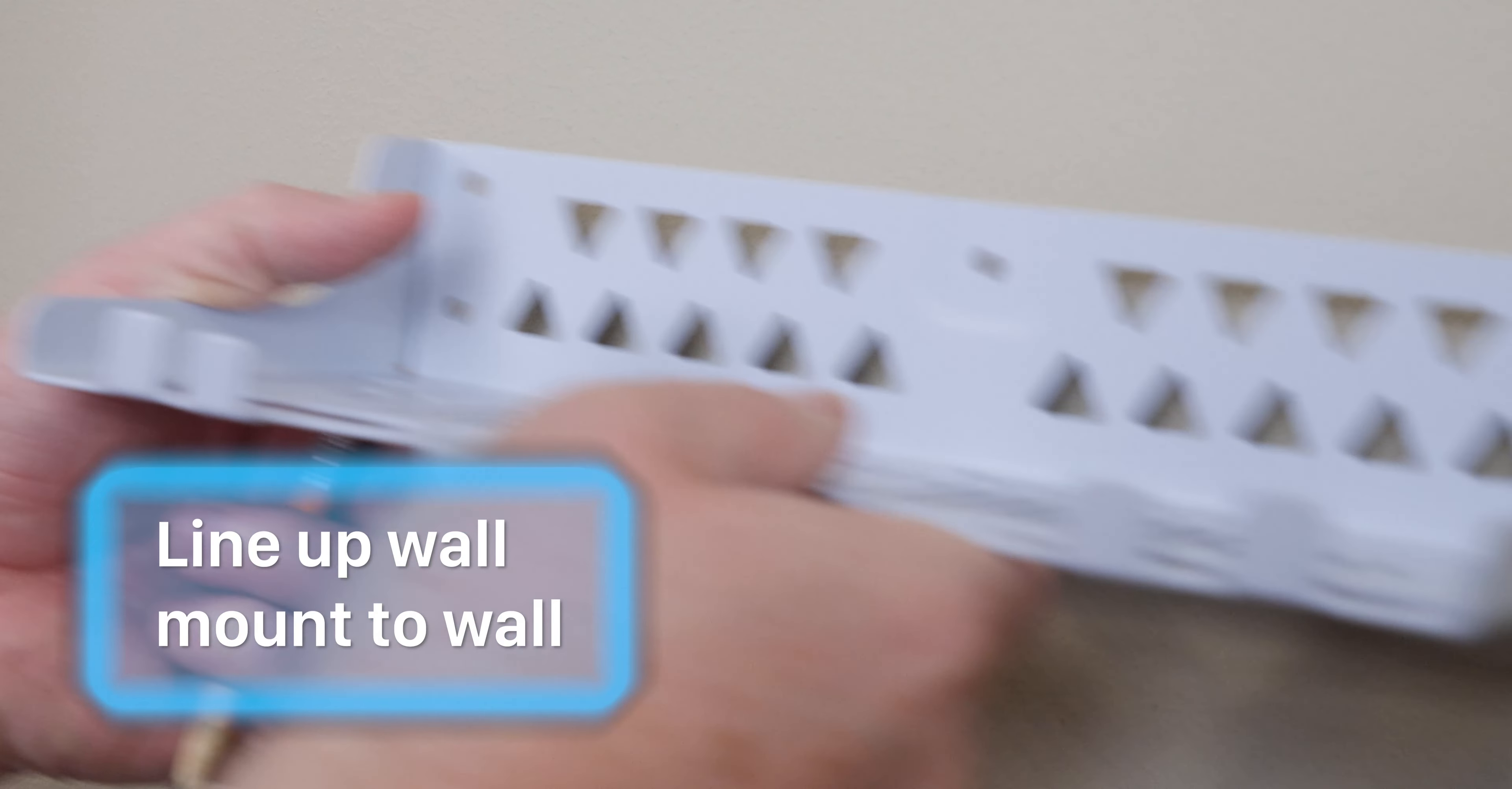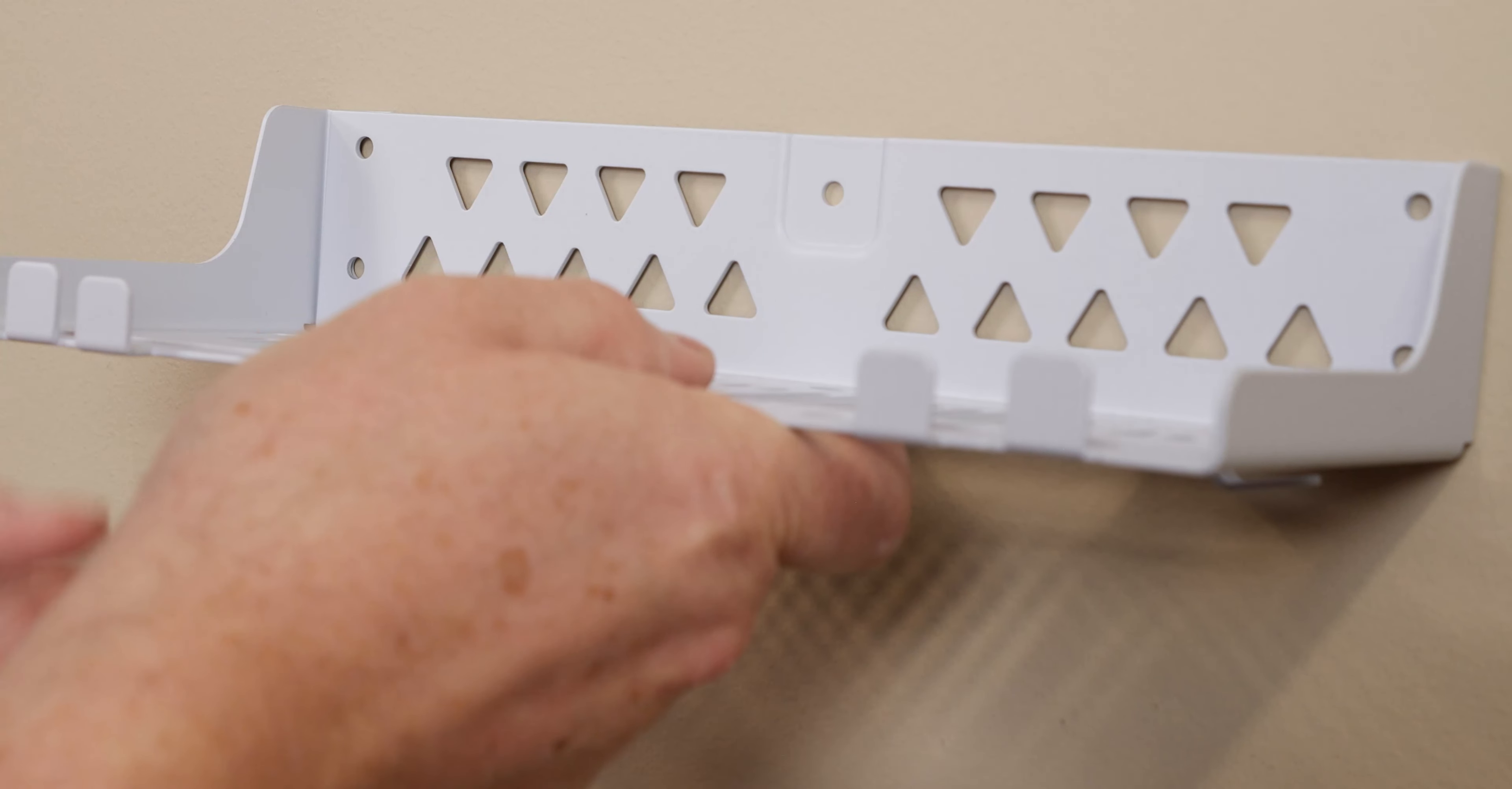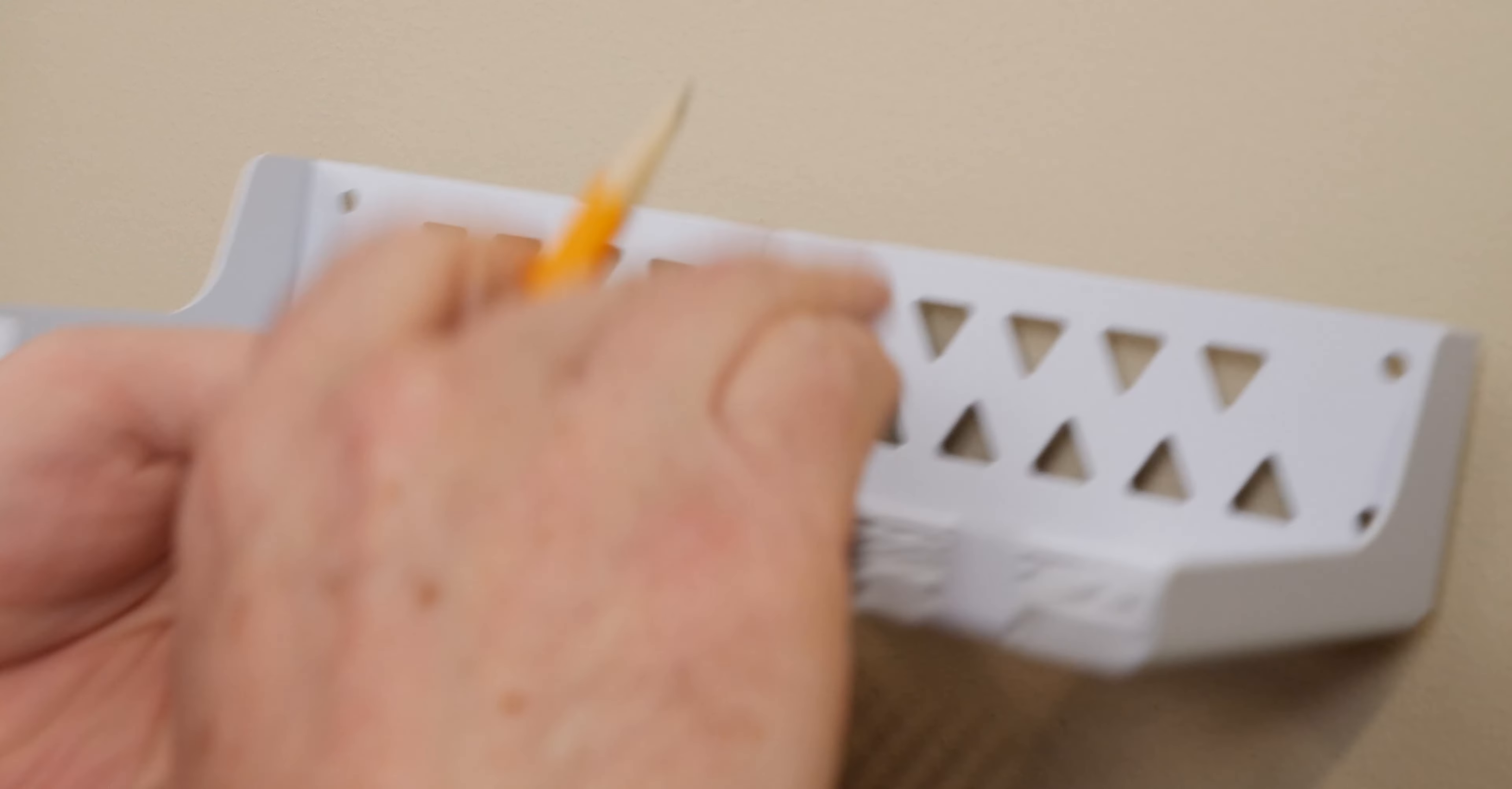Line up the wall mount to your surface so you know where exactly to drill your five holes. Refer to the product diagram to see where the mounting holes are located.